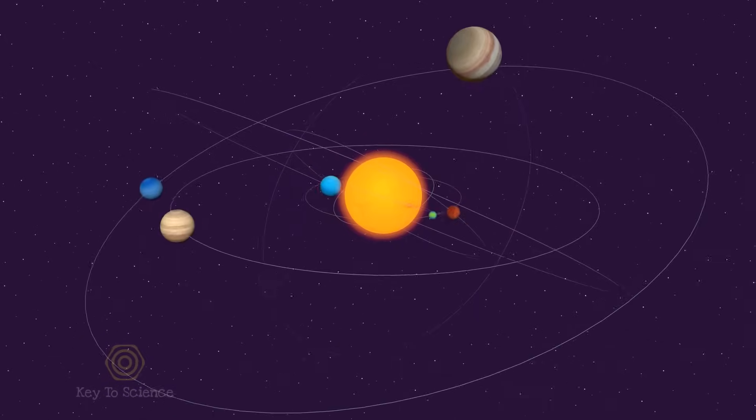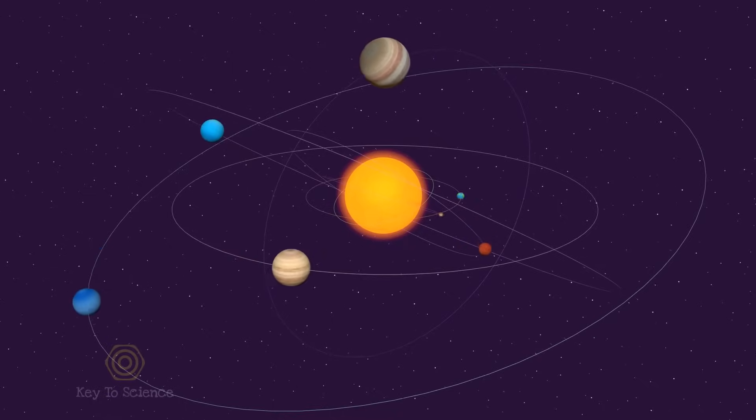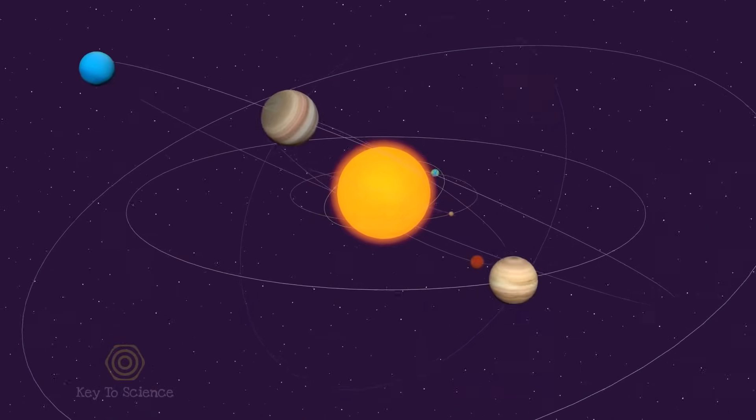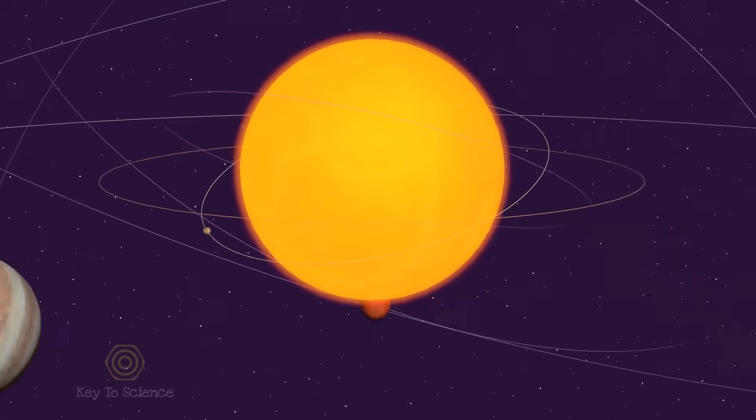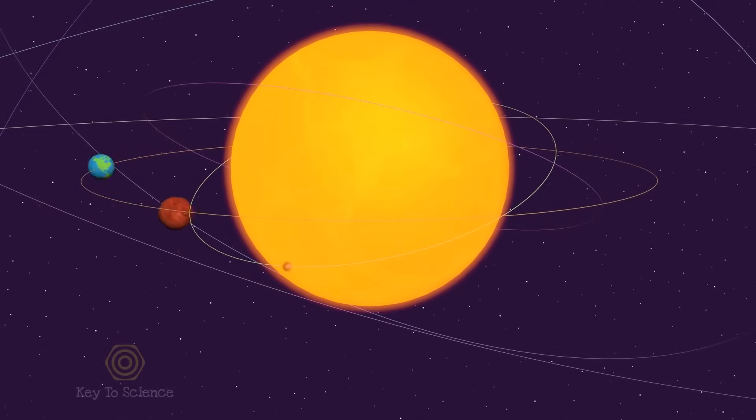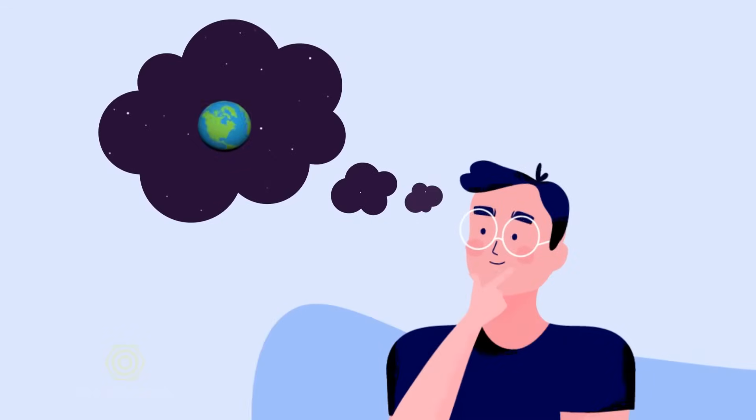Earth, the third planet of our solar system, is always rotating. Though we cannot feel its rotation, it revolves around the sun and rotates around its own axis. Have we ever thought to use its rotation in some intelligent ways?